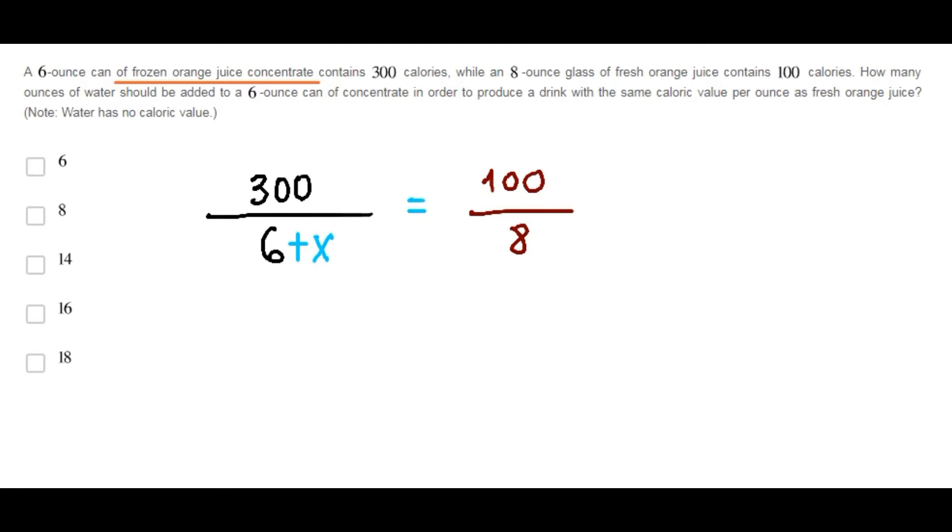Now, cross multiply. This is 300 times 8 equals 6 plus x times 100. I will cancel zeros. Now, 24 equals 6 plus x, x equals 18.